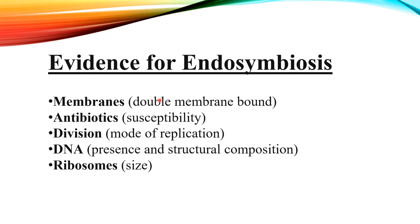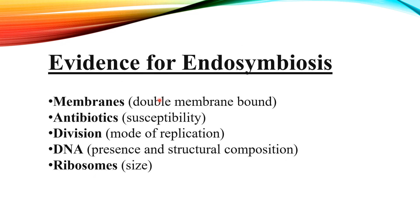To summarize today's lecture: the endosymbiotic theory provides an explanation for how modern eukaryotes evolved from prokaryotes. Mitochondria and chloroplasts are both organelles suggested to have arisen via endosymbiosis. Evidence that supports the extracellular origin of these organelles can be seen by looking at certain key features. First, membranes: some organelles have double membranes, and the outer membrane may be vesicular in origin.